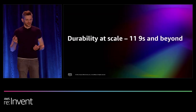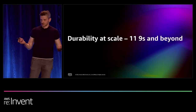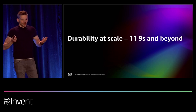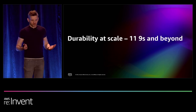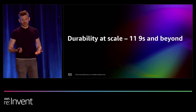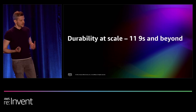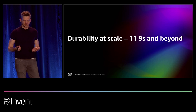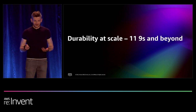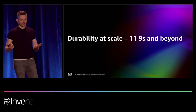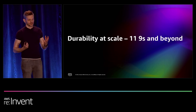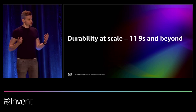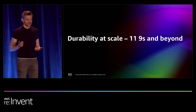Durability is a natural place to start because the most important requirement for any storage system is to retain your data — storing it without losing it. You've probably heard that Amazon S3 is designed for 11 nines. We will discuss exactly what this means, where this number came from, and why it doesn't describe the full picture, and why durability is more than just this particular property. To do so, let's go back to fundamentals.